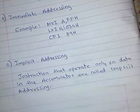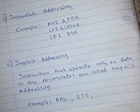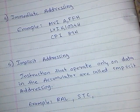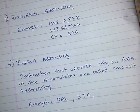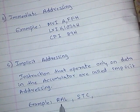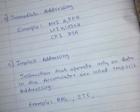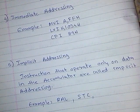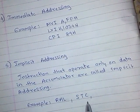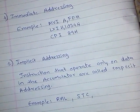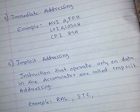The next addressing mode is implicit addressing mode. These are instructions performed only on the accumulator. For example, RAL will rotate the content of the accumulator — suppose we have 8-bit data in the accumulator and we want to rotate those bits, RAL will do that. Or STC, which will set the carry flag. This does not require any other register or memory location — therefore, we call this implicit addressing.